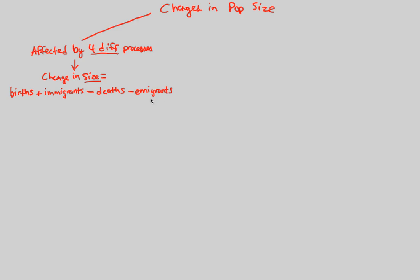There are also going to be people leaving the population, and we call these people emigrants — different from immigrants. Those who are entering the population are immigrants; those who are leaving are emigrants. Those who are born are part of the births, and those who die are part of the deaths. So we have four different processes affecting the change in population size: we add up the things that are entering and subtract the things that are leaving.